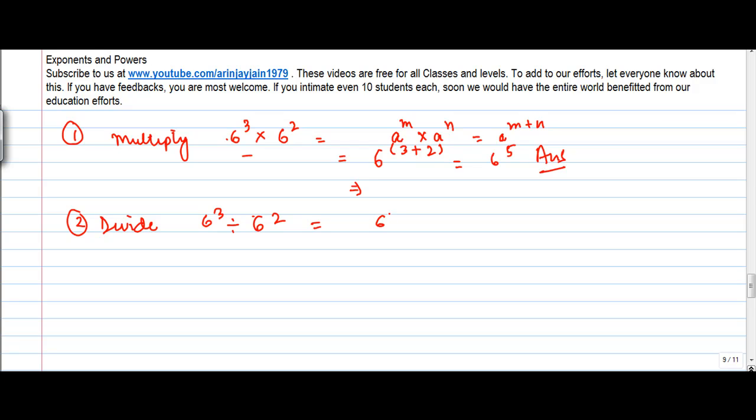Divide 6 to the power 3. So we saw earlier x to the power m divided by x to the power n is equal to x to the power m minus n.